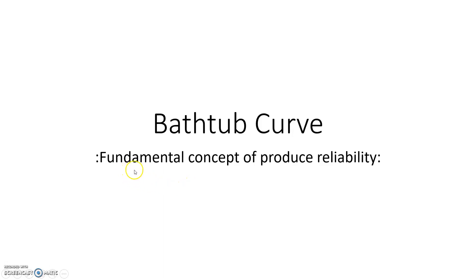In this video I am going to discuss the fundamental concept of product reliability using the bathtub curve. Whether you consider a sensor, a small bulb, or a satellite, all products have their own failure rate. If we want to determine the failure rate with respect to time, we go for the bathtub curve, which gives us the idea of the rate of failure for a particular product with respect to time.